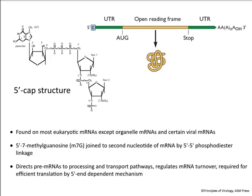The cap is important for processing of the mRNA turnover, and as we will see today, it's required for efficient translation of mRNAs. The mRNA also has an open reading frame that begins with usually an AUG codon, but not always, and then a stop codon. There are typically five prime and three prime untranslated regions — UTRs — and a polyA tail. Not all viruses have polyA tails; some use different mechanisms.